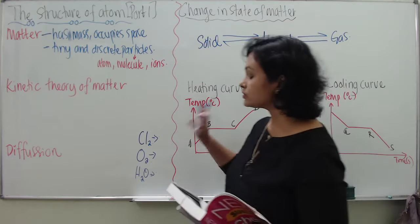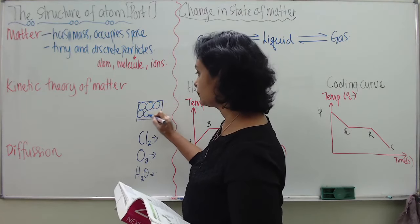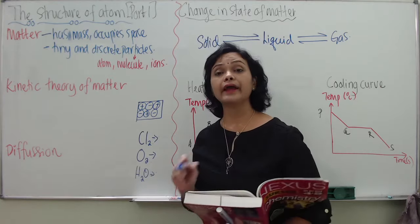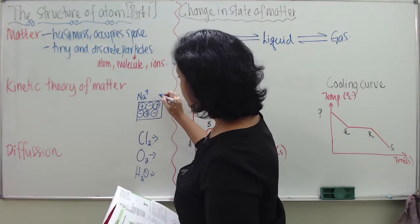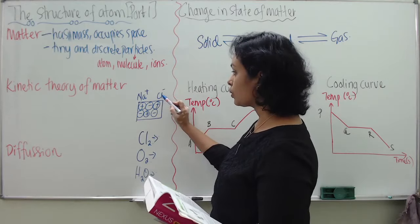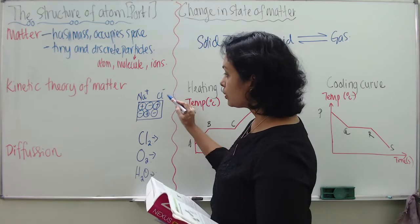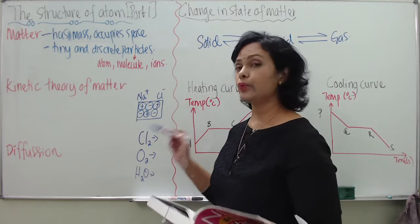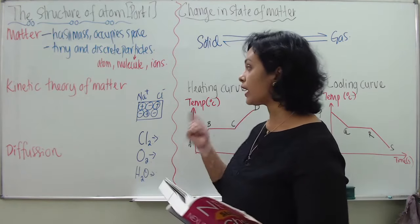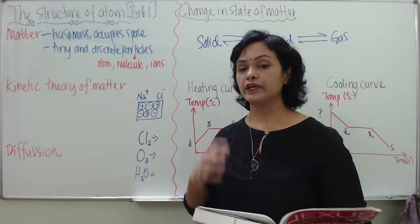Now let's go to ions. Ions are substances which are made up of charges — positive and negative charges. For instance, sodium chloride contains positively and negatively charged elements, which are called sodium ion and chloride ion. In solid state, they do not move. But when sodium chloride is dissolved in water, the ions can move freely. So ions can move freely in aqueous or molten state, but in solid state they can't move freely.